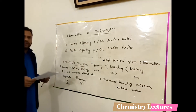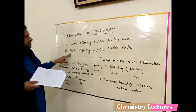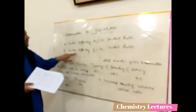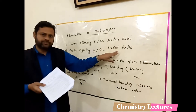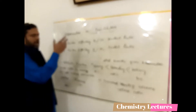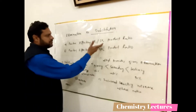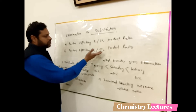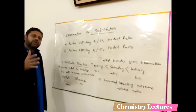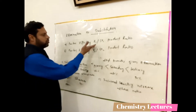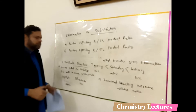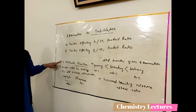There are two categories: factors affecting E1 or SN1 product ratio, and factors affecting E2 or SN2 product ratio. Whether the reaction proceeds through E1/SN1 or E2/SN2 mechanism, we can use these factors to direct our reaction toward elimination or substitution. The first factor is substrate structure.